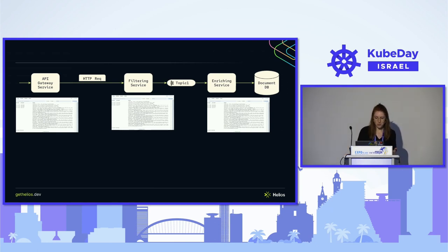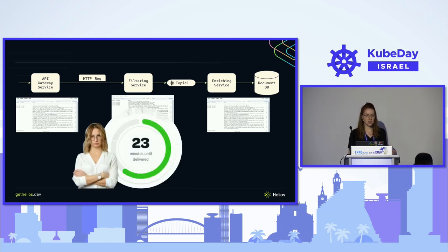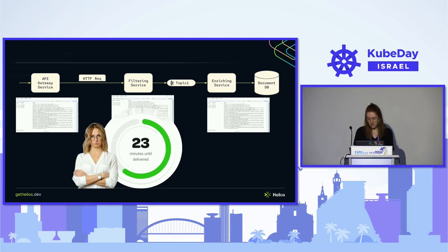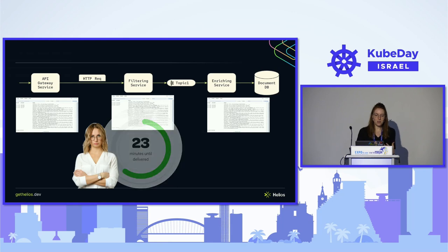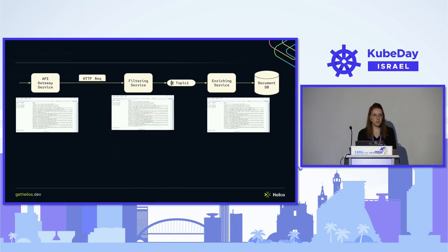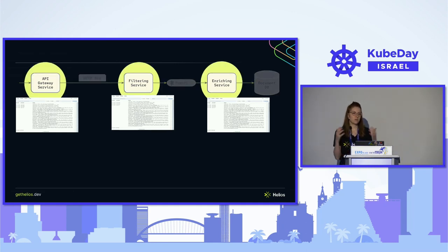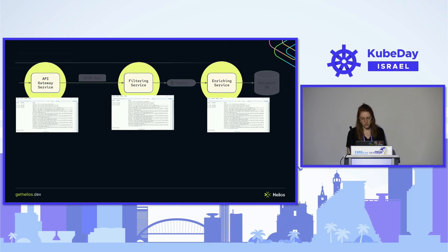The logs don't contain any indicative errors. Even though she has logs for the services, the logs are specific to each service, making it very hard to connect the dots and see something coherent across the flow. At this point she doesn't know what to do and she's very frustrated.